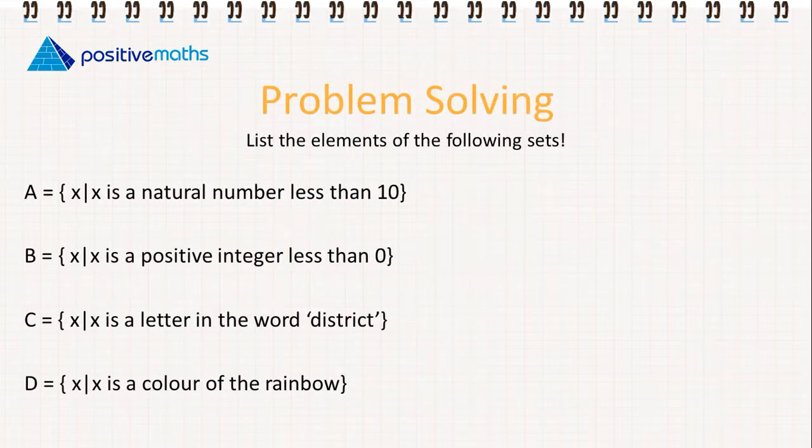Let's look at a problem. We want to list the elements of the following sets. First of all, we have A is equal to x, where x is a natural number less than 10.